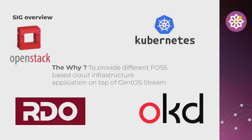First, let's remind ourselves of the purpose of the SIG. It's to provide cloud infrastructure services on top of CentOS Stream systems and CentOS-like systems. It could be infrastructure as a service, platform as a service, or whatever — everything that is related to cloud in any kind.